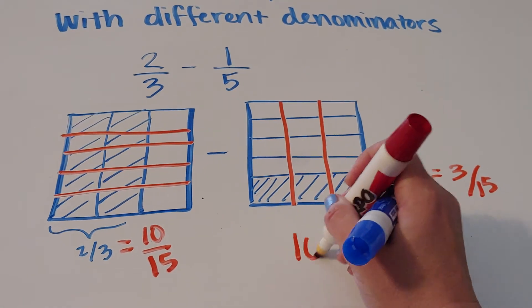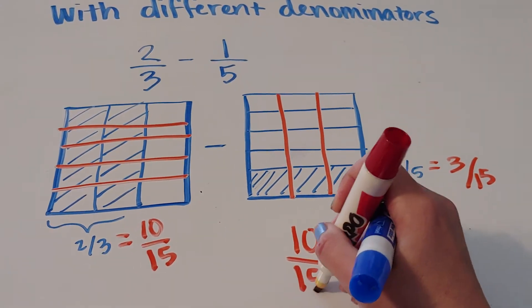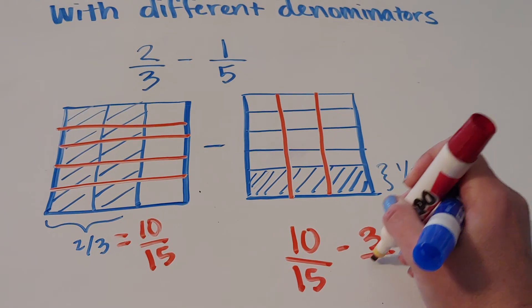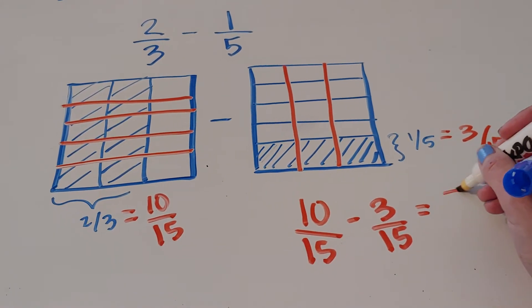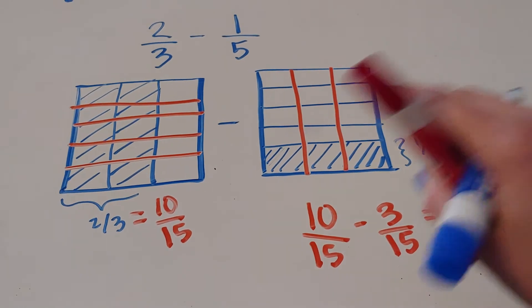So I want to now find 10 fifteenths, take away three fifteenths. And of course, you guys all know that 10 fifteenths minus three fifteenths is seven fifteenths. However, how are we going to show that in the picture?